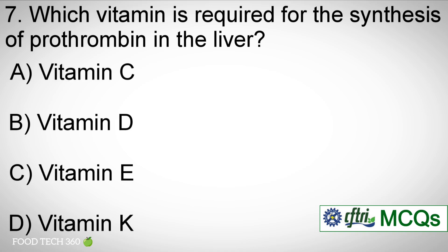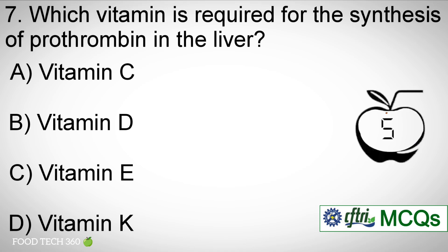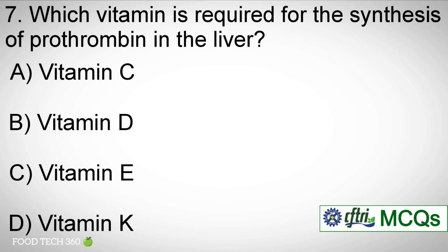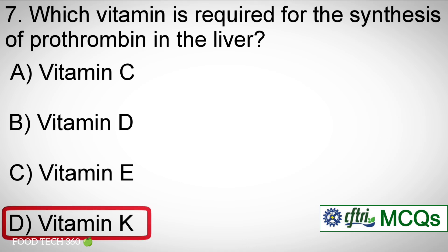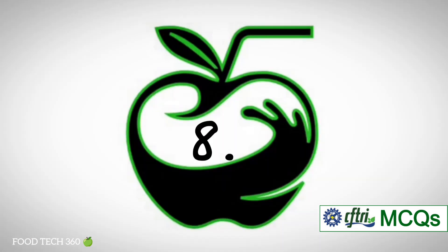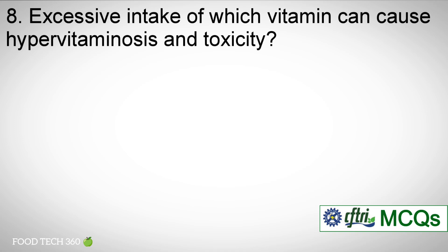Question number seven: which vitamin is required for the synthesis of prothrombin in the liver? Options: a) Vitamin C, b) Vitamin D, c) Vitamin E, d) Vitamin K. Correct answer: d) Vitamin K.